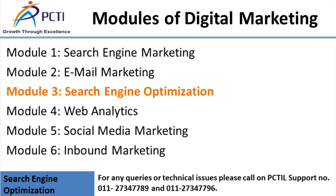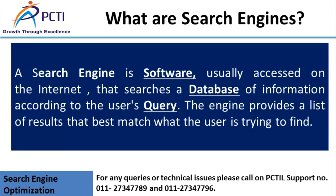Let's understand what search engines are. A search engine is a software — basically a website with a search box — where you put in a query and it returns a bunch of links or results. For example, Facebook has a search box, so it's called a Facebook search engine. Even the App Store or Google Play Store, if you enter a query it returns a list of app results. Google, Bing, and Yahoo are all different examples of search engines.